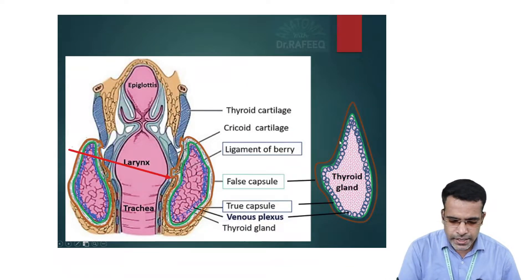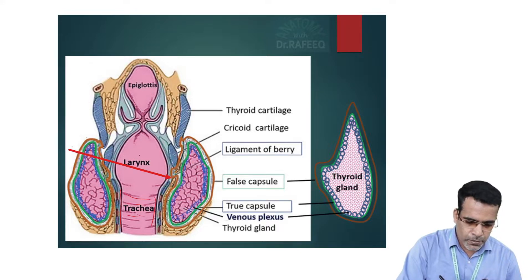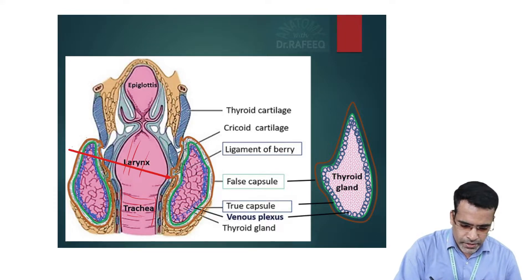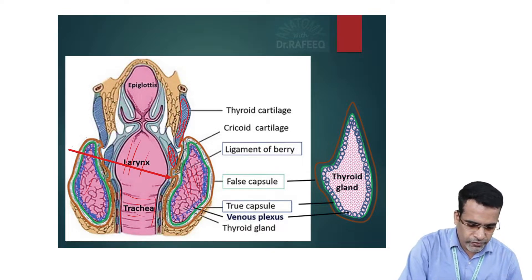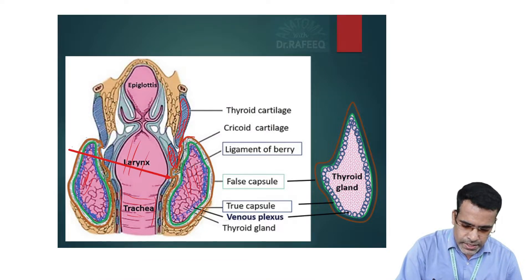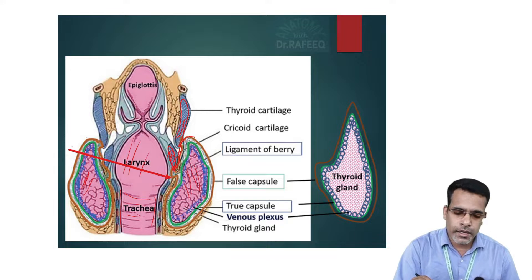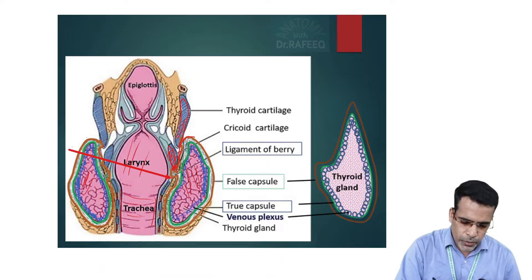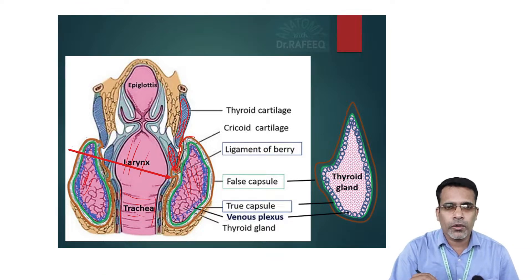The false capsule, derived from the pre-tracheal fascia, forms the suspensory ligament. In the posterior view, we have the trachea or windpipe, with the laryngeal cavity just above. The cricoid cartilage sits above the thyroid cartilage. The false capsule gets connected to the cricoid cartilage by a ligament called the suspensory ligament, or ligament of Berry. This connection is the reason the thyroid gland moves up and down during swallowing.